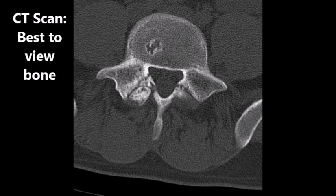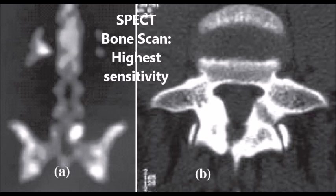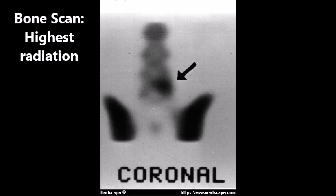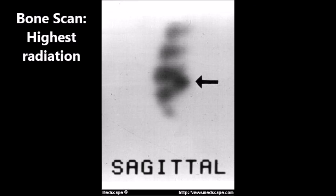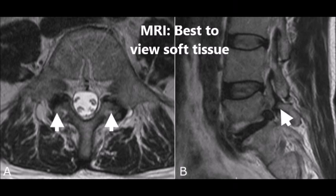If x-rays are insufficient for diagnosis, a CT scan or SPECT bone scan is generally the second course of action. A CT scan is best for the visualization of bone, but a bone scan may be preferred since it is sensitive to any bony areas in the active healing process. However, bone scans subject patients to much more radiation than CT scans, so both tests should be considered carefully. An MRI often misses a spondylolysis defect, but may still be warranted for patients with more complex issues, such as spondylolisthesis with disc or nerve involvement.